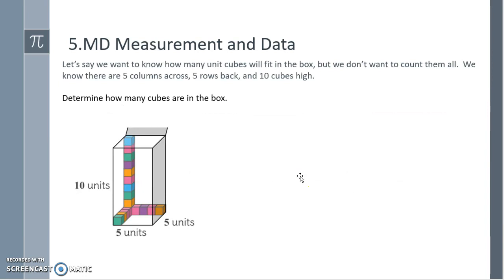Let's say we want to know how many unit cubes will fit in the box but we don't want to count them all. We know there are five columns across, five rows back, and ten cubes high. Determine how many cubes are in the box. Well, I know that each layer will have 25 cubes since five times five is 25. There are 10 layers of cubes, so 25 cubes per layer times 10 layers is 250 unit cubes.